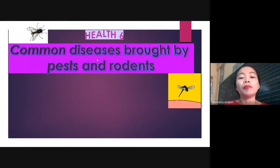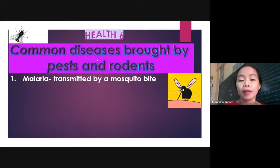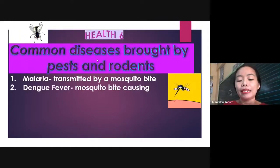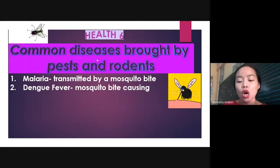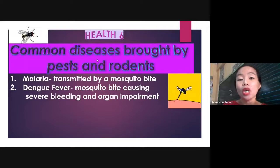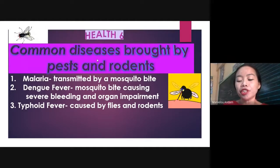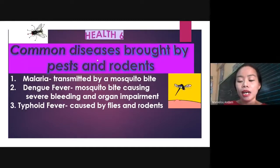So these are the common diseases brought by pests and rodents. Malaria — transmitted by a mosquito bite, wherein it infects our red blood cells. Dengue fever — potentially deadly due to mosquito bite, causing severe bleeding and organ impairment. Typhoid fever — it is a severe bacterial infection caused by salmonella deposited by flies or rodents in the water that we drink or in the food that we eat.